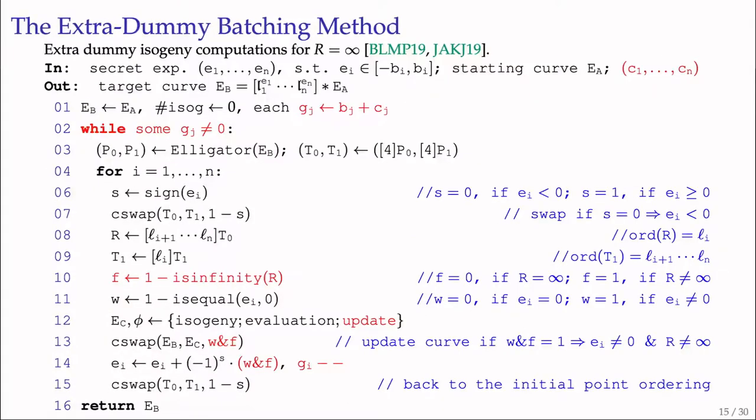Our first method aims at making group action independent of all inputs and randomness. In brief, we remove the if clause checking whether R is infinity, at the cost of extra dummy isogeny computations. This idea has been proposed in two previous implementations. To apply this, we add a new constant-time infinity test and update the curve and other variables accordingly. Meanwhile, we add a new constant Ci for each Bi. The total number of isogeny computations increases to the sum of Bi plus Ci.